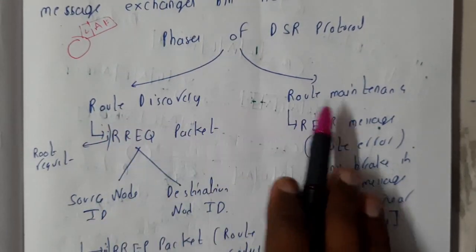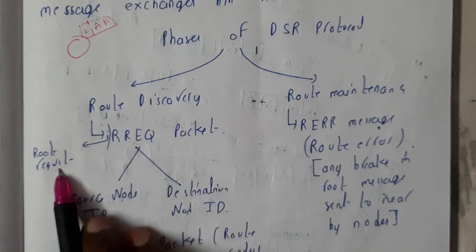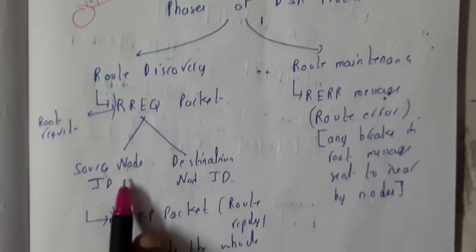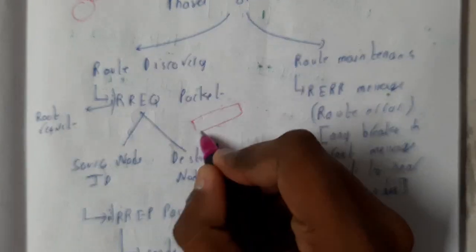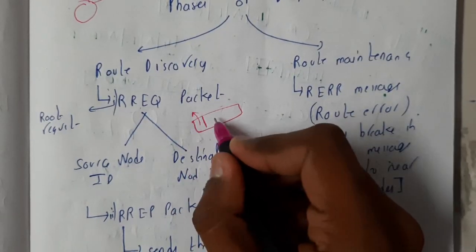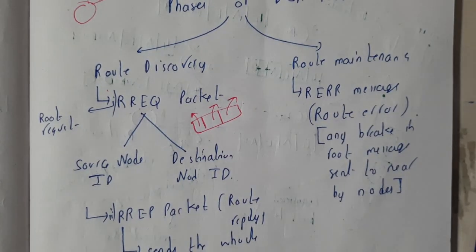Here we are having routing discovery and routing maintenance. Routing discovery is nothing but route request. Route request packet will be having a source ID and destination ID. We will be having a particular ID and the source ID and destination ID.